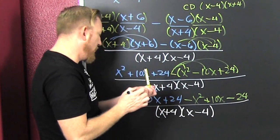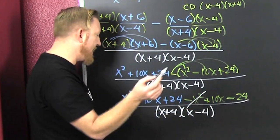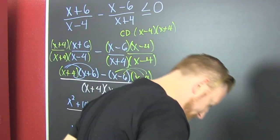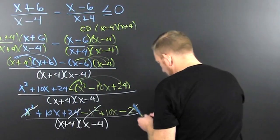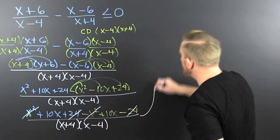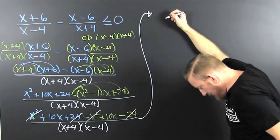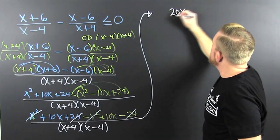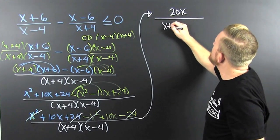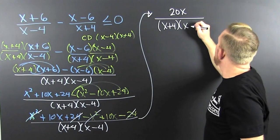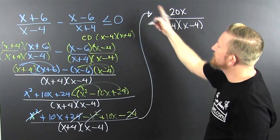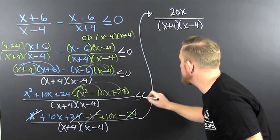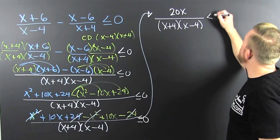Now things are gonna cancel out. x squared's gone, 24 is gone. I'm gonna take it to the top. Looks like I'm gonna have 20x, divided by my common denominator, that's x plus 4 times x minus 4. Now, what was all this for? This needed to be less than or equal to 0. This is still less than or equal to 0.